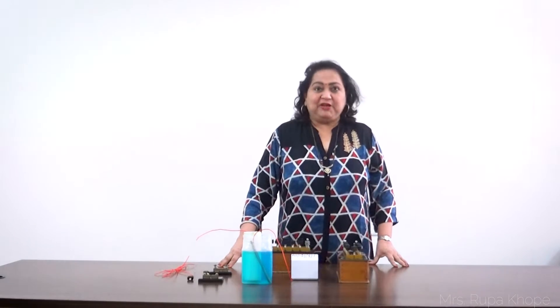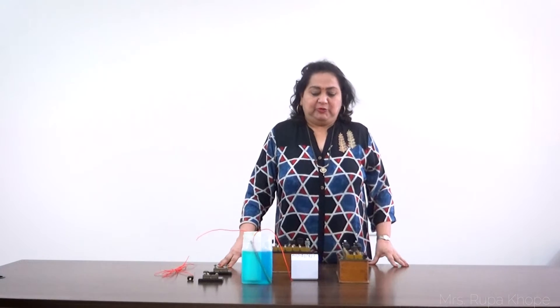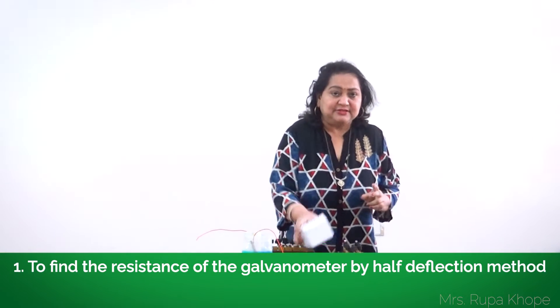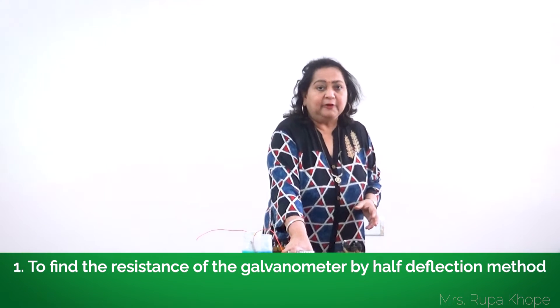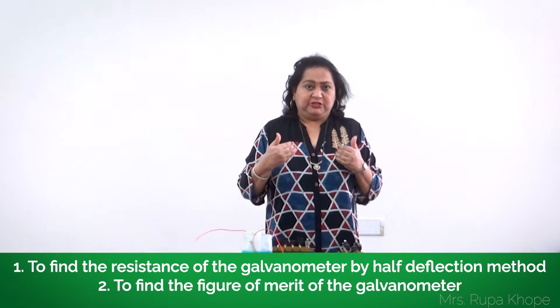Hello students, now we have come to the physics lab to perform the experiment on the galvanometer. So what are we going to perform? We are performing two things. First we have to find the resistance of this galvanometer by half deflection method and the second one to find the figure of merit of the galvanometer.